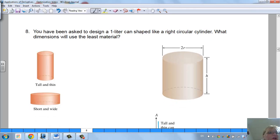Let's look at what we could have here. We could have a cylinder that's tall and thin, right here, and we could have one that's short and wide like a tuna fish can.